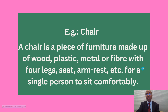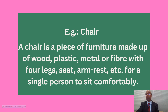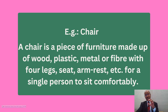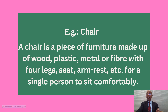Here all the four parts of the definition can be seen. 'A chair' is the name or the term. 'A piece of furniture' is the group or class it belongs to. 'Made up of wood, plastic, etc.' — that is the features or characteristics of the object. 'For a single person to sit comfortably' is the last part, that is the function or use.